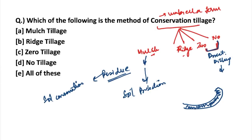In zero tillage, there is no movement on the soil except for the growing of the crop. These are all the methods of conservation tillage: mulch tillage, ridge tillage, zero tillage, and no tillage.